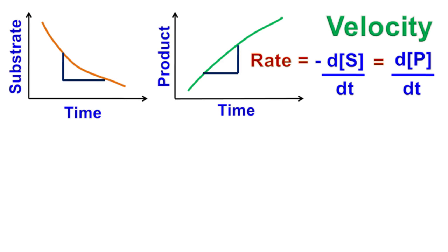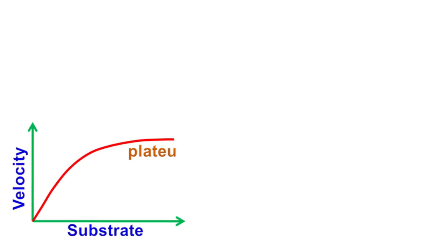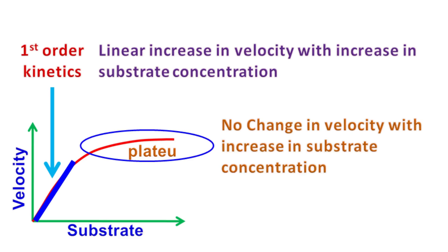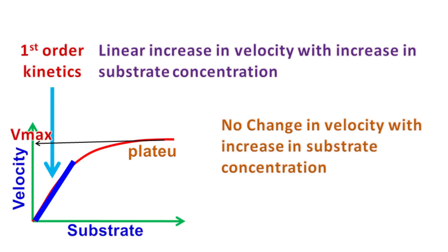When we measure the velocity of reaction at different substrate concentrations, we get a graph which looks like this. The first part of the graph is linear, where the rate of reaction increases linearly with substrate concentration — this is called first-order reaction kinetics. Then the graph shows a plateau region where increasing substrate concentration no longer increases the velocity. At this stage, velocity has reached maximum velocity, or Vmax. This plateau region is known as zeroth-order reaction kinetics, meaning velocity is independent of substrate concentration.